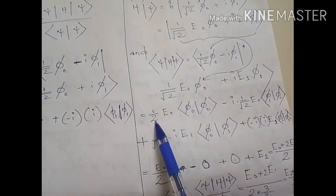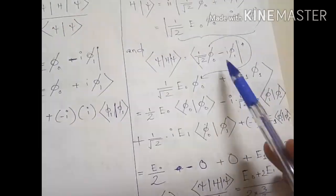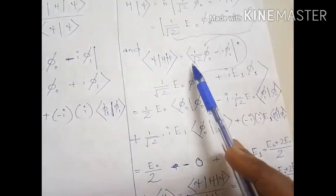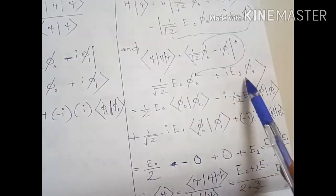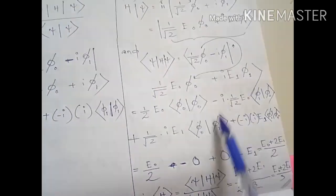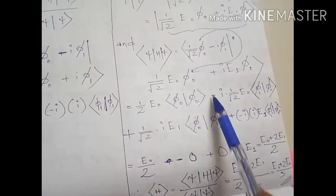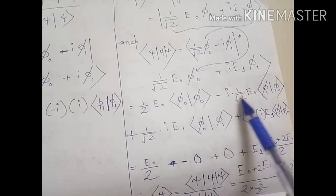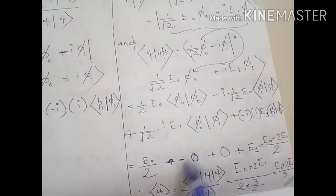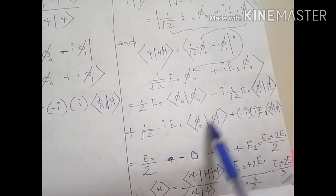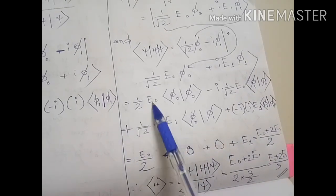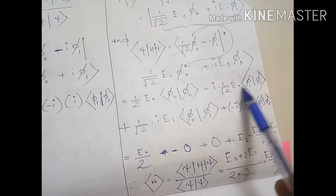Working through the terms: (1/√2)(1/√2) = 1/2 times E₀ times ⟨φ₀|φ₀⟩; then the cross term with -iφ₁ into E₀φ₀ gives ⟨φ₁|φ₀⟩ = 0; similarly iφ₀ into iE₁φ₁ gives ⟨φ₀|φ₁⟩ = 0. The last term is (-iφ₁)(iE₁φ₁) giving -i·i·E₁·⟨φ₁|φ₁⟩. The two cross terms are zero, so we are left with the diagonal terms.